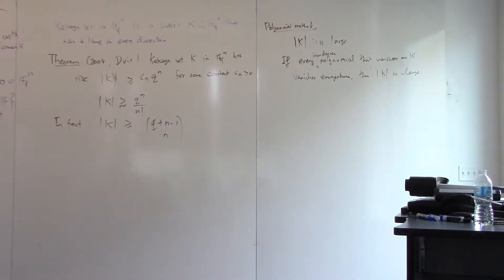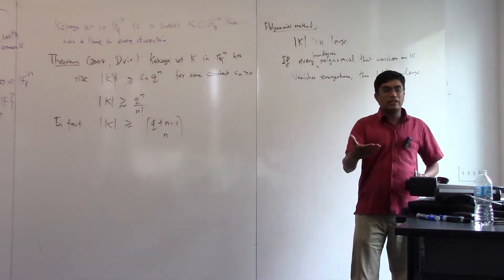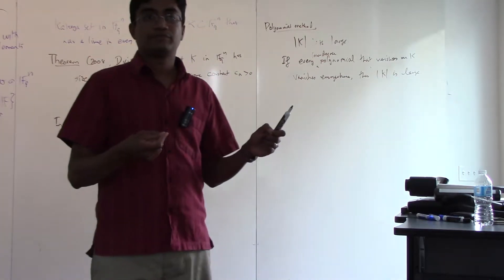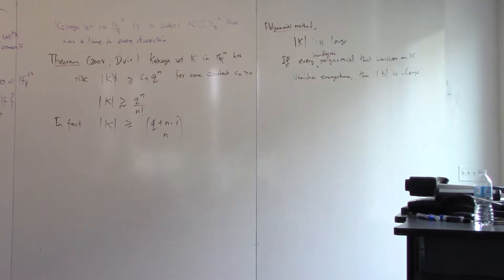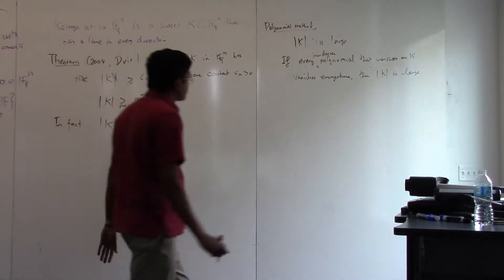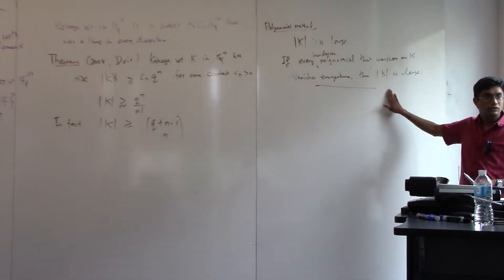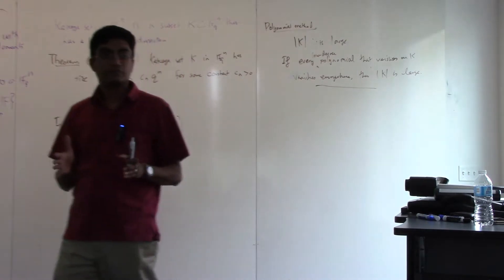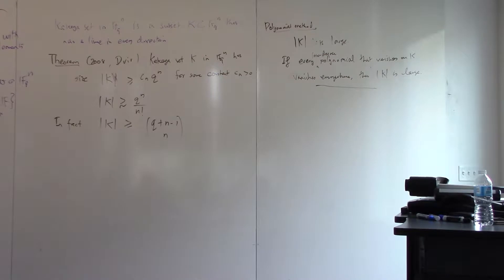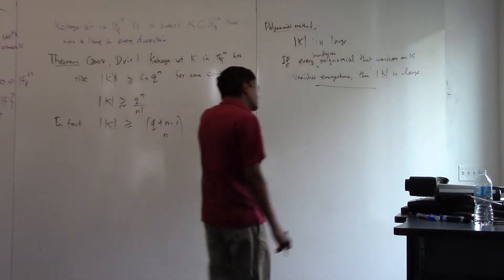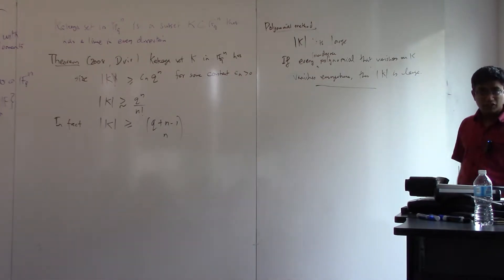For example, just think of the univariate case. If you have a bunch of points in one dimension and you want to prove they are large: if the set size is at most D, you can find a non-zero polynomial of degree D which vanishes exactly there. So if you prove every degree-D polynomial vanishing on that set must be identically zero, then the set is bigger than D. This might seem like a fact about polynomials, but it's really just linear algebra, because polynomials form a linear space.